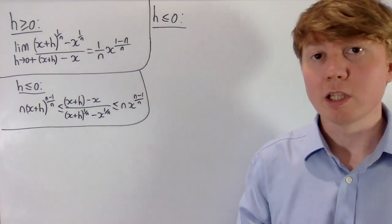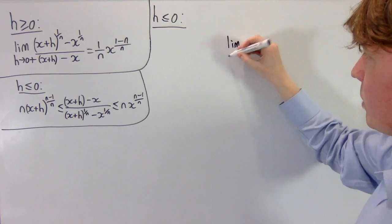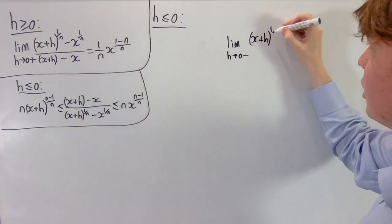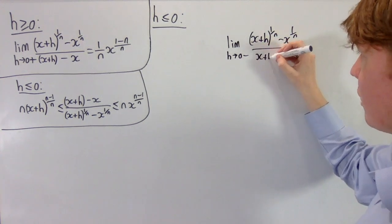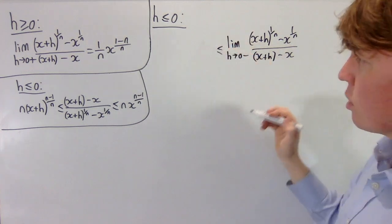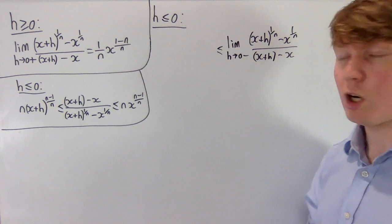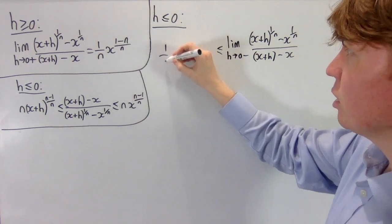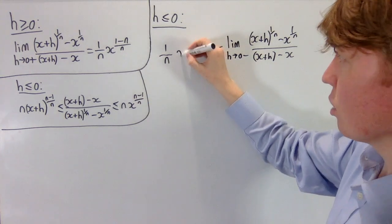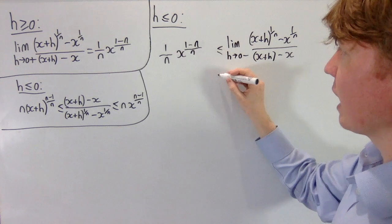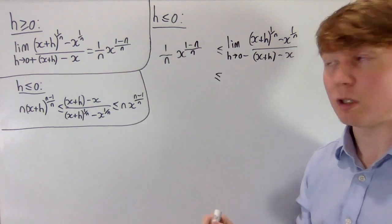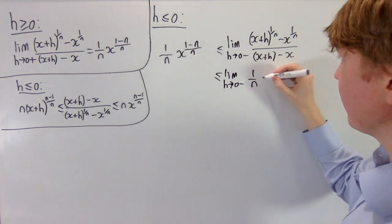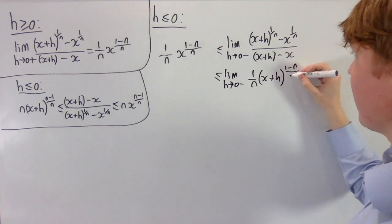Finally, we need to calculate the left derivative, where h is less than or equal to 0. We're interested in the limit as h tends to 0 from below of x plus h to the 1 over n minus x to the 1 over n, all over x plus h minus x, which is just h. To get our new lower bound, we take the reciprocal of the upper bound, because the inequality signs change when we take reciprocals. There's no need to include the limit since this is just a constant: the reciprocal of n gives 1 over n, and the reciprocal of our x term is x to the 1 minus n over n. Our upper bound is now the reciprocal of the previous lower bound: as h tends to 0 from below, we've got 1 over n times x plus h to the power of 1 minus n all over n.